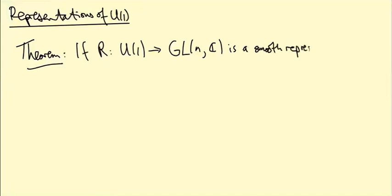in other words, we can differentiate with respect to the coordinate theta in e^{iθ} on U(1), then there exists a basis of C^n, in other words, of the vector space on which these matrices are acting,